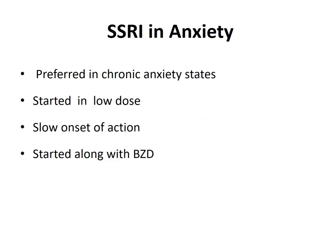A few points about the use of SSRIs in anxiety. We have different agents like citalopram, escitalopram, fluoxetine, fluvoxamine, etc. Their most common indication is depression, but these agents can be preferably used in chronic anxiety states also. It is started in a low dose and can be gradually titrated according to need. It has a slow onset of action, so it is not preferred for acute cases. It is usually used for chronic situations and usually started alongside a benzodiazepine, because initially the effects are carried out by the benzodiazepine. When the SSRIs take action, we can gradually taper the dose of the benzodiazepine.